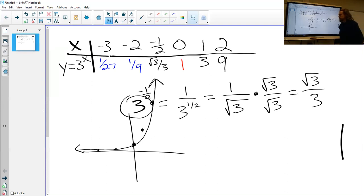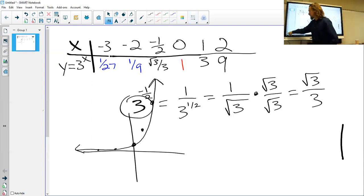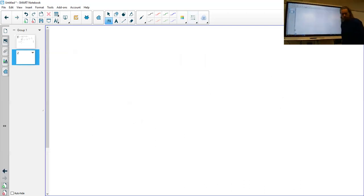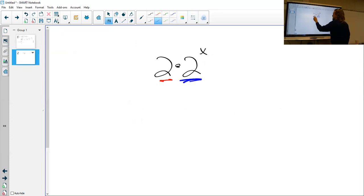So really focusing on the base number here. And then the last couple of problems that you see, what is different when we have like 2 times 2 to the X? So what does this number do to our graph? And what does this coefficient in front of our power do to the graph?